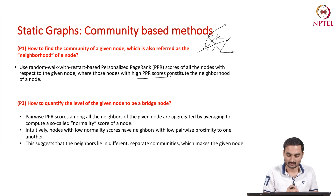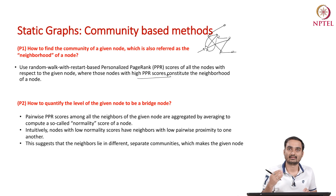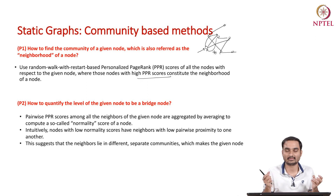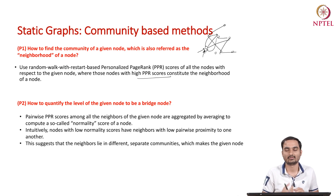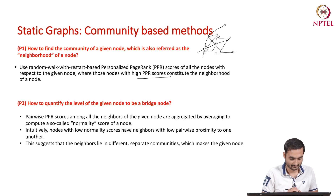Nodes with higher personalized PageRank values are basically neighbors. We repeat the random walk with restart multiple times, and nodes within close proximity of the seed node will be visited multiple times and gain high personalized PageRank scores. In this way, we identify nodes with high personalized PageRank scores and assign them as neighbors of the given seed node.